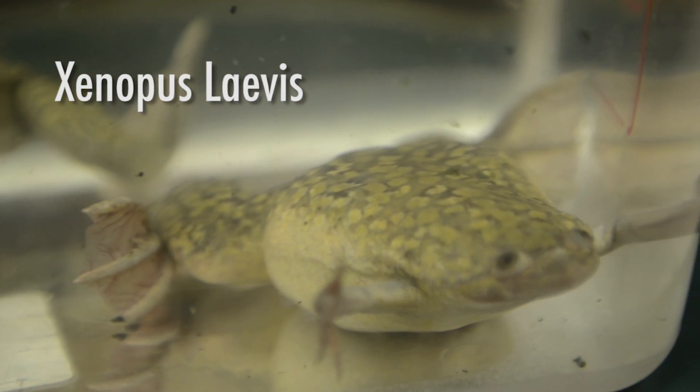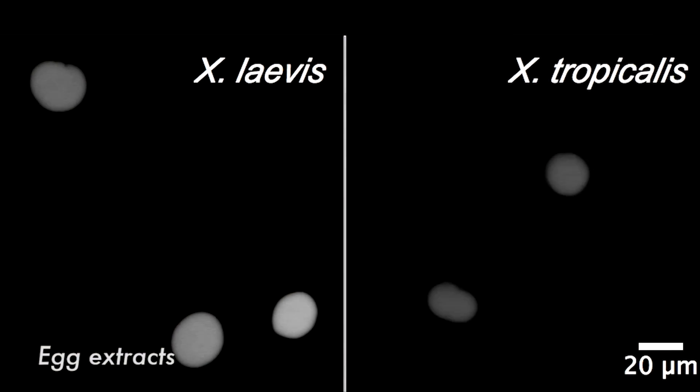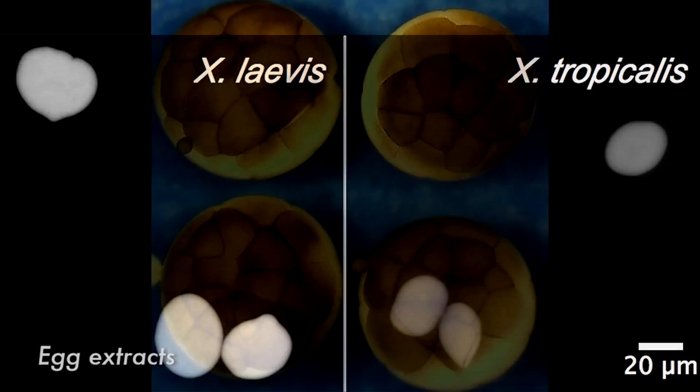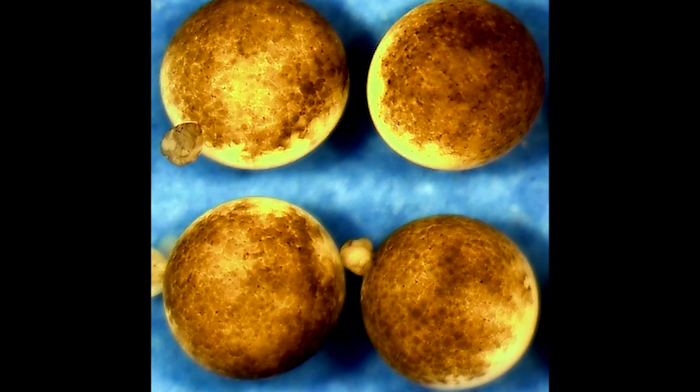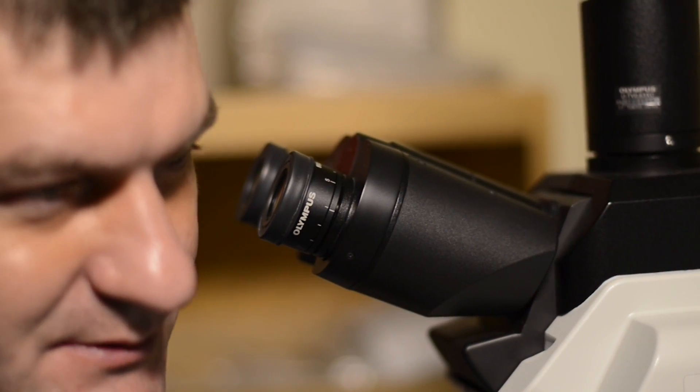The other system we use for studying size regulation is another frog system. Instead of looking at early embryogenesis, we compare two different frog species. One of the pathways we found that's important for regulating size is nuclear import. Nuclei have structures called nuclear pore complexes within the nuclear envelope — basically passageways or channels that allow proteins to be transported into and out of the nucleus. We found that in Xenopus laevis frogs, which have larger nuclei, the rates of nuclear import are faster, and that correlates with their larger size. We've determined some of the proteins that differ between these two frogs and identified specific proteins being imported that are important for this difference in size.